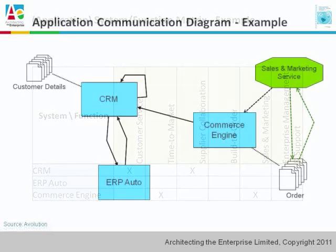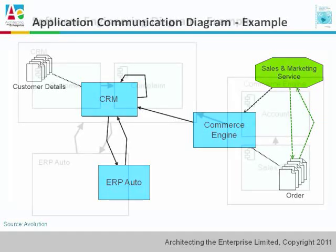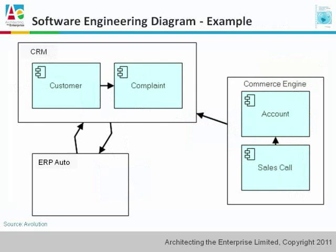Application communication diagram. The blue boxes are the applications, and it shows how these applications relate to the high-level data entities, and also to the business services in green.